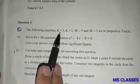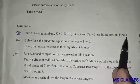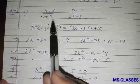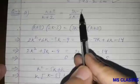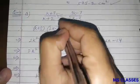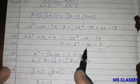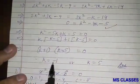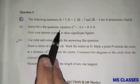The numbers (k + 3), (k + 2), (3k − 7), and (2k − 3) are in proportion. Find k. Since the four numbers are in proportion: (k + 3)/(k + 2) = (3k − 7)/(2k − 3). Cross-multiplying and simplifying gives a quadratic equation. Solving by splitting the middle term gives k = −1 or k = 5.